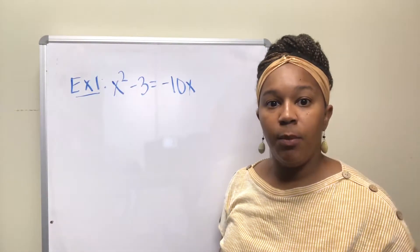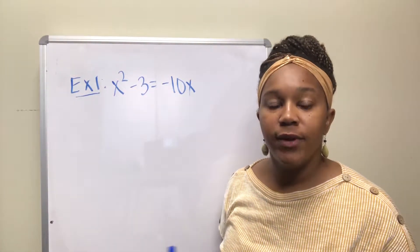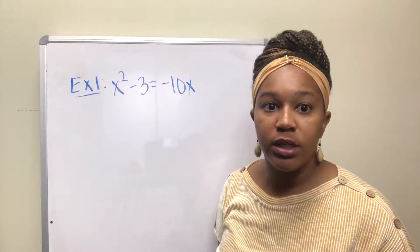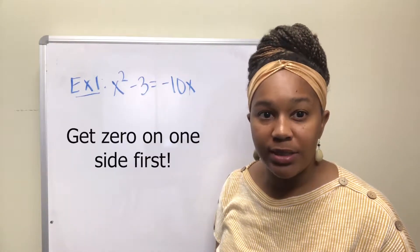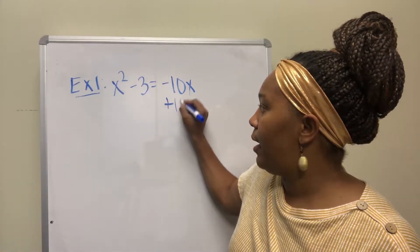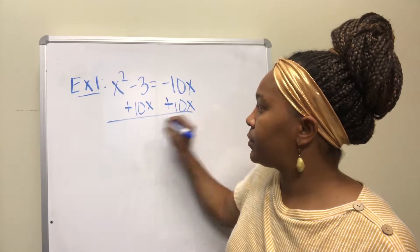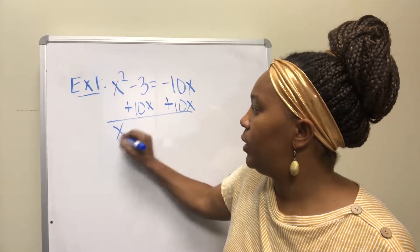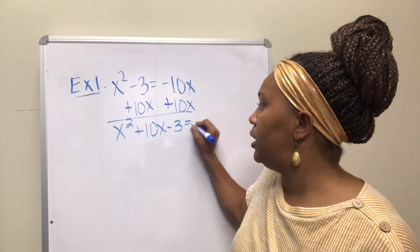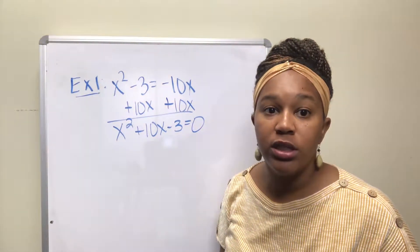We're going to solve example one: x squared minus three equals negative 10x. The first thing you want to do is make sure it's in the form of a quadratic equation, meaning you need to have zero on one side. So we take this negative 10x and move it to the other side by adding 10x to both sides. We get x squared plus 10x minus three equals zero.